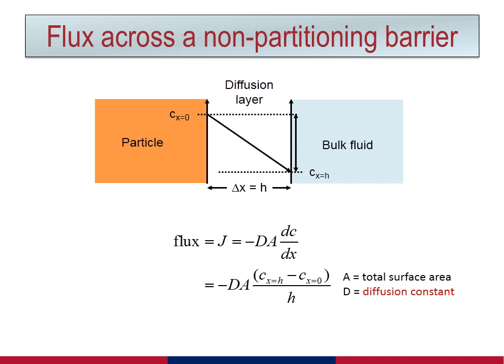For convenience, we will assign spatial coordinates to the diffusion layer using x as the variable. Diffusion occurs from left to right, where x equals 0 to x equals h, the thickness of the diffusion layer. This creates a concentration gradient, where the drug concentration is highest at x equals 0, where the particle surface meets the diffusion layer.